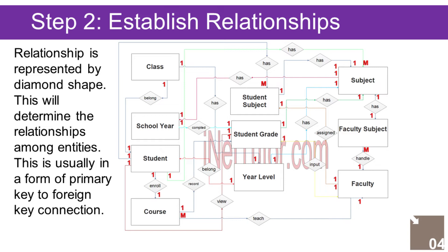After we have specified our entities, it is time now to connect or establish a relationship among the entities. 1. The student is enrolled in a course — one-to-one relationship. 2. The student belongs to a class — one-to-one relationship. 3. The student belongs to a year level — one-to-one relationship. This is the case for regular students. Irregular students may be in second year but with subjects in first year or advanced subjects in third year. In this case, the student will be in the year level where the student has the most subjects taken. 4. The student has multiple subjects taken — one-to-many relationship.